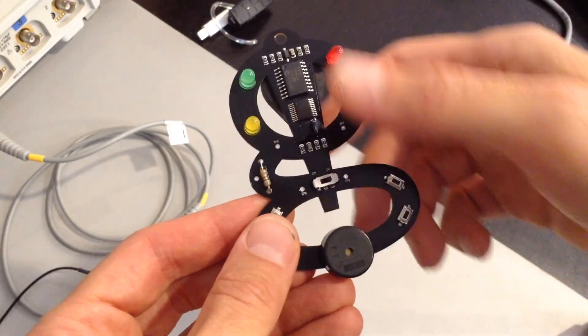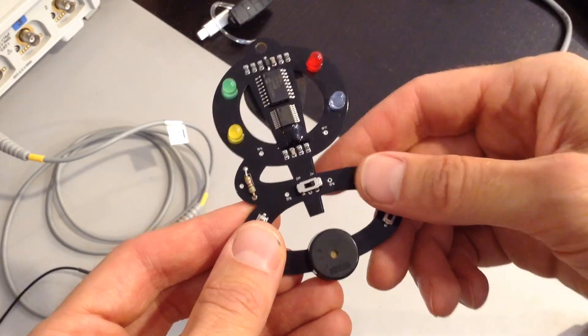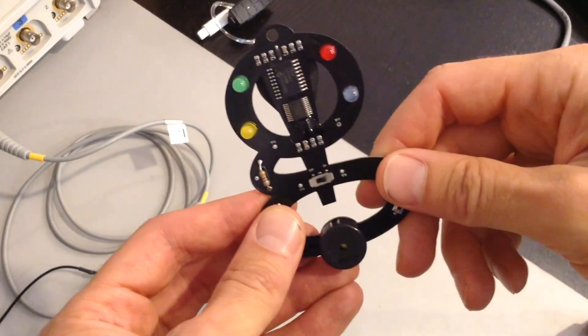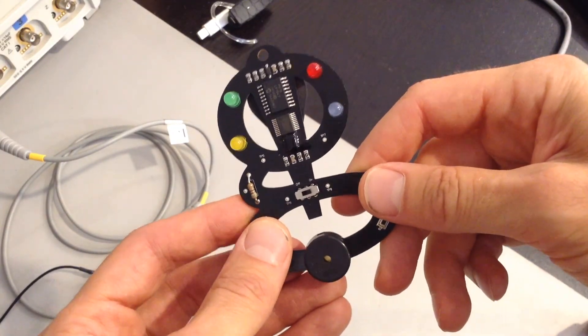What this is, is the circuit is going to look for a four-digit pin, and if you enter the correct pin, then the security will be defeated, and the circuit will turn into a Game of Simon, the memory game.